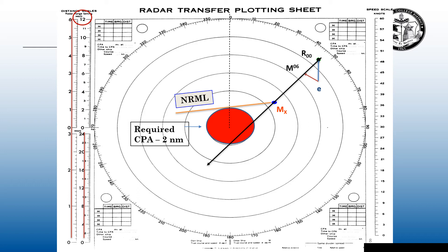We're still going to parallel or transfer MX to M06 — M&Ms — and still draw that same new relative motion line out to starboard. Instead of changing course by stabbing E and swinging R with our compass, now we just measure the distance to the intersection of our E to R speed vector and that new relative motion line. It looks like we're going to slow down to approximately 10 knots. So when this contact tracks down this relative motion line and gets five miles away from me at MX, I slow to 10 knots and the contact will pass ahead of me by two nautical miles.